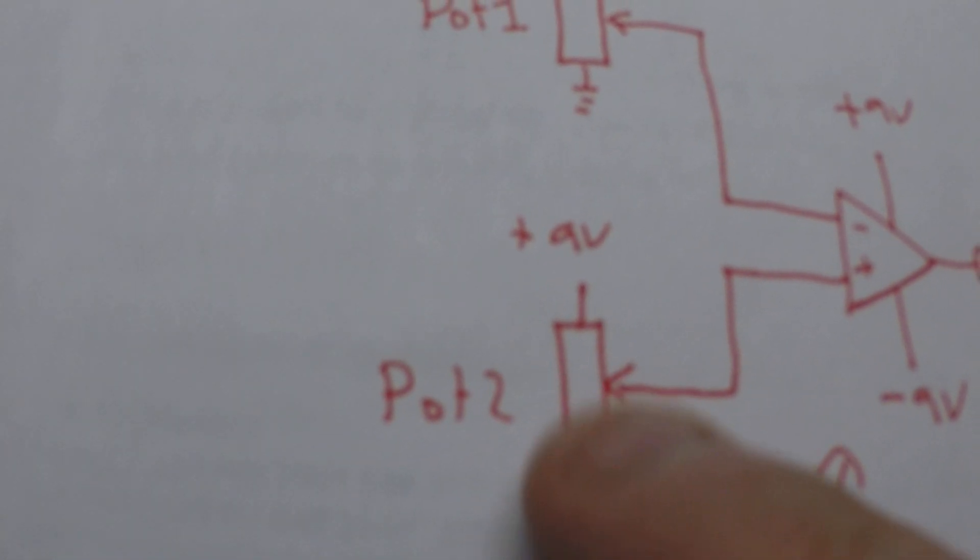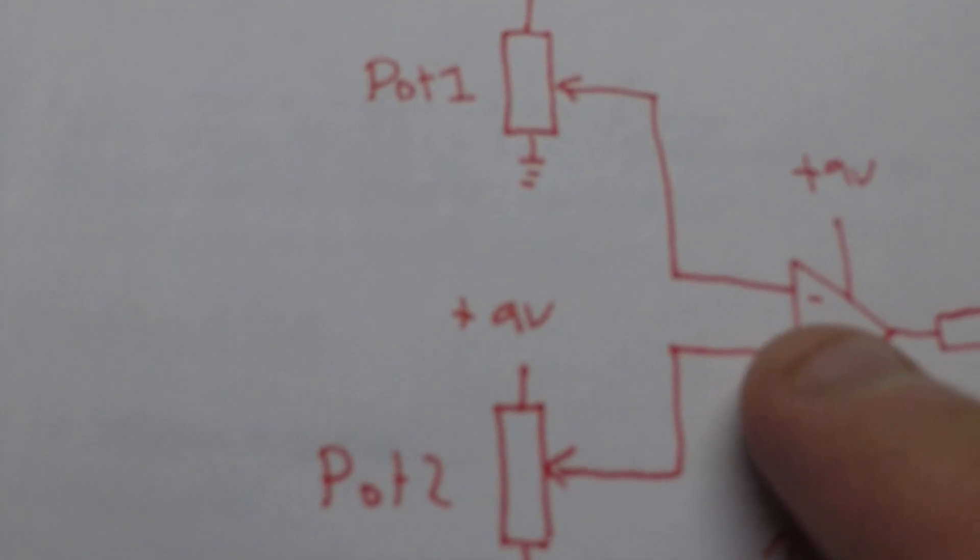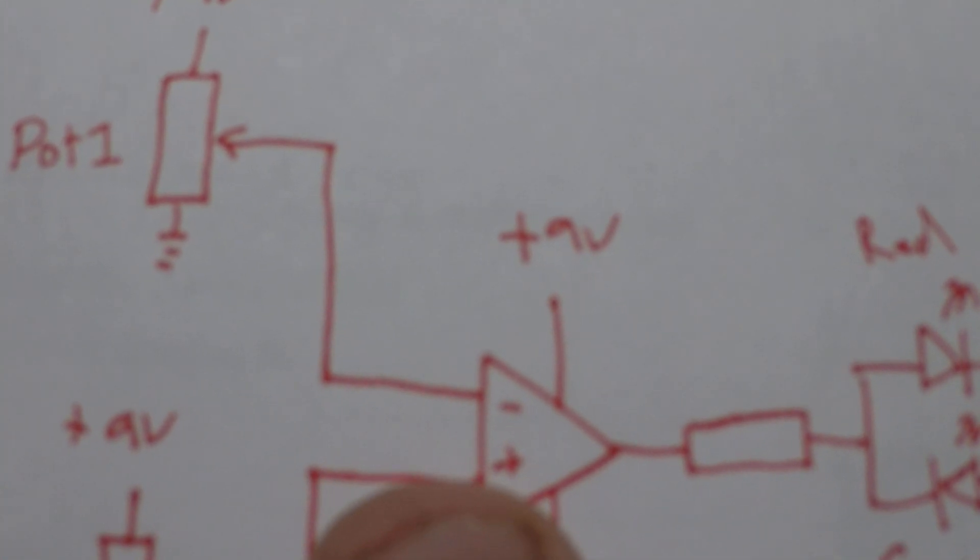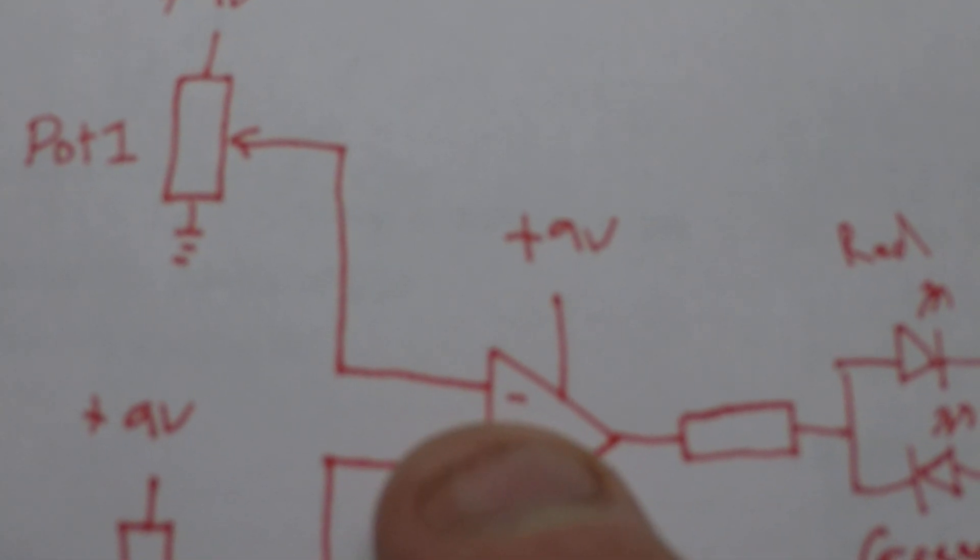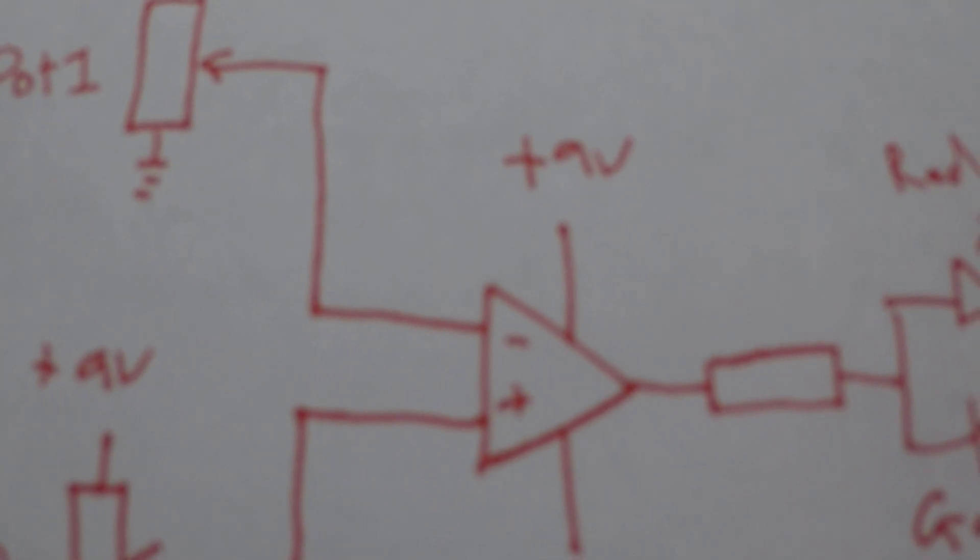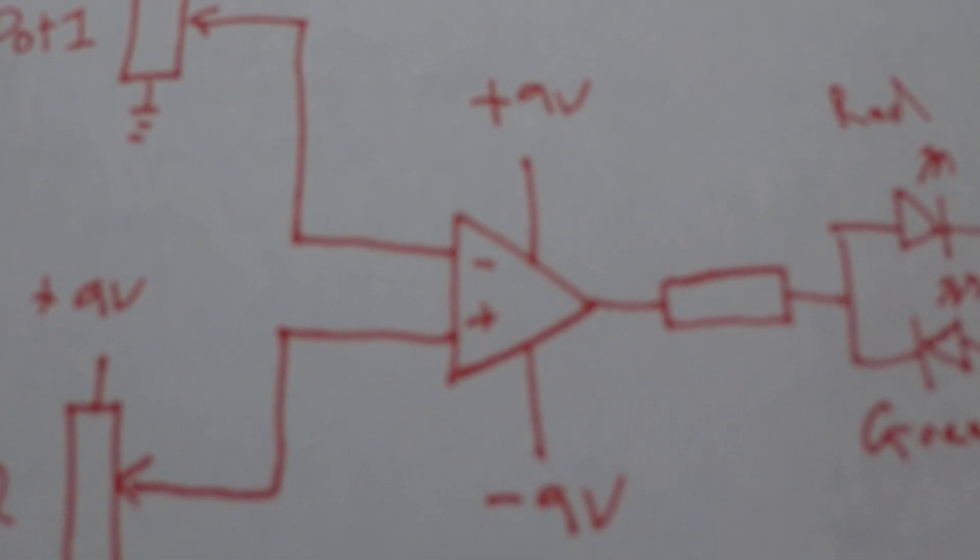I can go from 9 volts to zero depending on what I've put there. What I've done here is I've put my outputs from the pots go to my inverting and non-inverting input on the op amp.